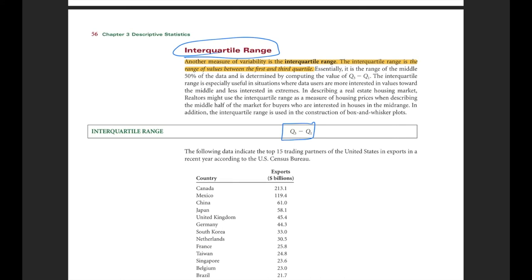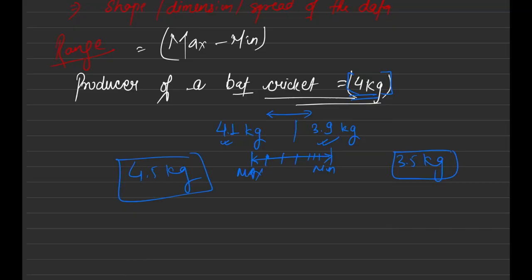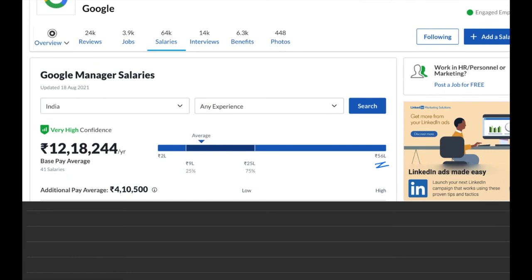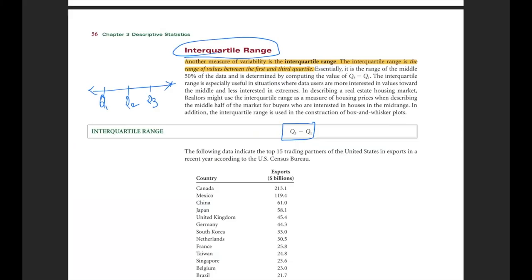That means if you have your Q1, Q2, and Q3, we'll just worry about this range, Q3 minus Q1. If you see the example of Google, here you see 25, 75, which is nothing but your Q1 and Q3, and this is the range that we should worry about. Because the maximum population, almost 50 percent population falling under this range. Remaining 25 here and remaining 25 here, but 50 percent population are falling under this range. So this is called your interquartile range, Q3 minus Q1.